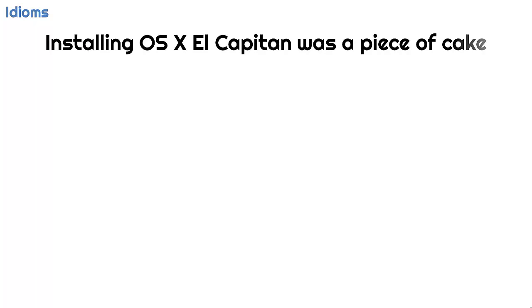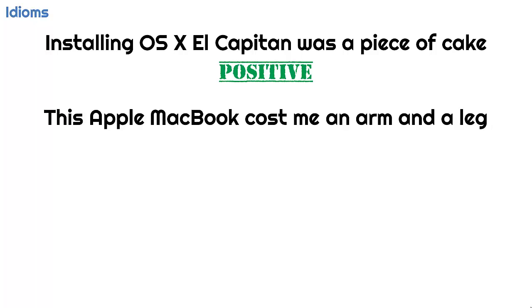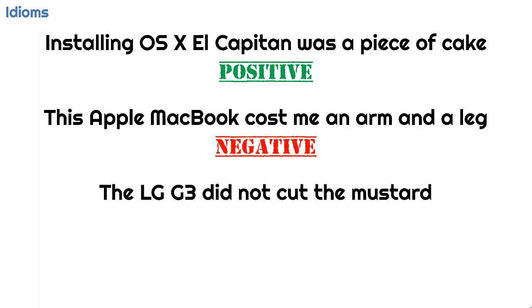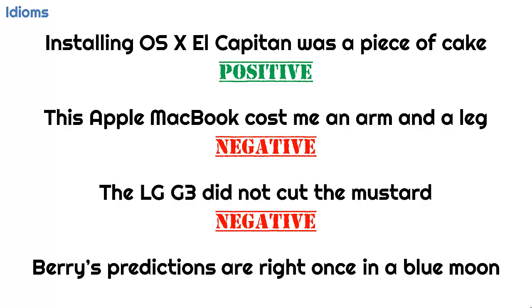In addition to individual opinionated words, sentiment analysis also has to deal with idioms. 'Installing OSX El Capitan was a piece of cake.' We know that 'piece of cake' is positive, so this is positive sentiment, even though it doesn't contain a positive sentiment word. 'This Apple MacBook cost me an arm and a leg.' We know that means it's expensive, so it's negative. 'The LG G3 did not cut the mustard.' Another negative idiom. 'Berry's predictions are right once in a blue moon.' Another negative statement without negative sentiment words.